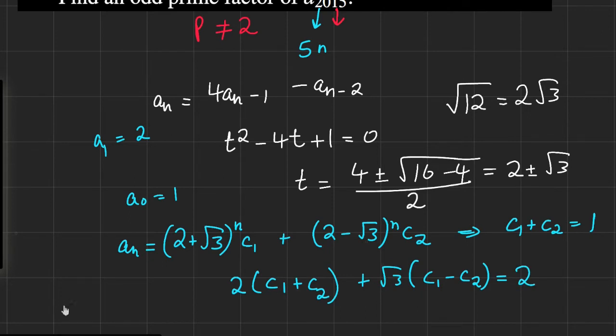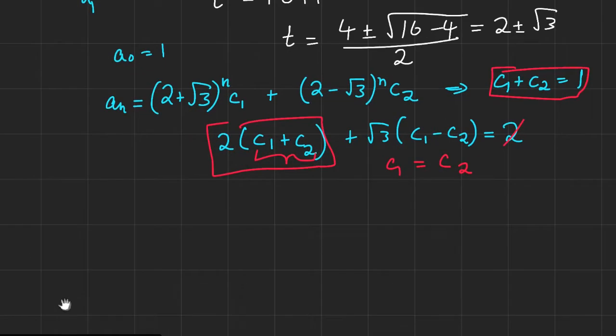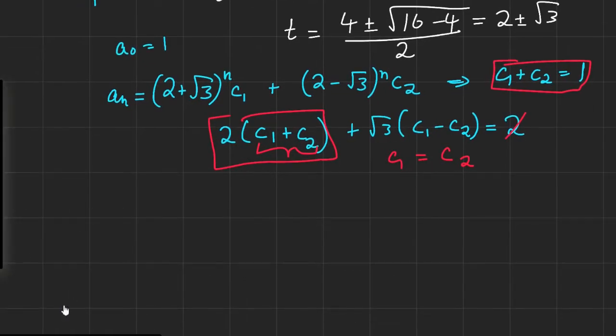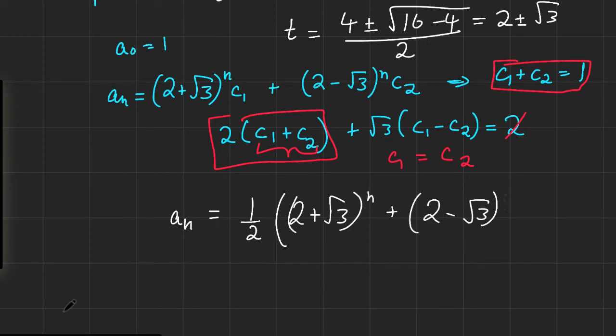We see that C_1 plus C_2, this is just 1, so we have a 2 here overall, and this would cancel out with the 2 here, so we're just going to be left with C_1 equals C_2. And we know that they're equal numbers, C_1 plus C_2 equals 1, so they're both a half. So we've solved for the general formula for our sequence. It's A_n equals one half times [(2 plus the square root of 3) to the n plus (2 minus the square root of 3) to the n].